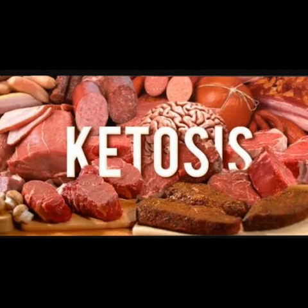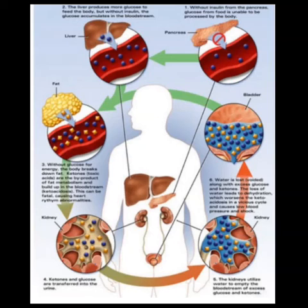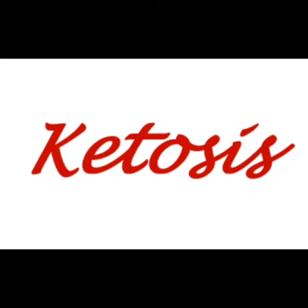The first disease is ketosis. Usually, fats break down to fatty acids and glycerol. But if adequate carbohydrates are not included in the diet, fats start to break down into ketones. High formation of ketones in the blood is passed through urine, known as ketonuria, and the overall process is known as ketosis.